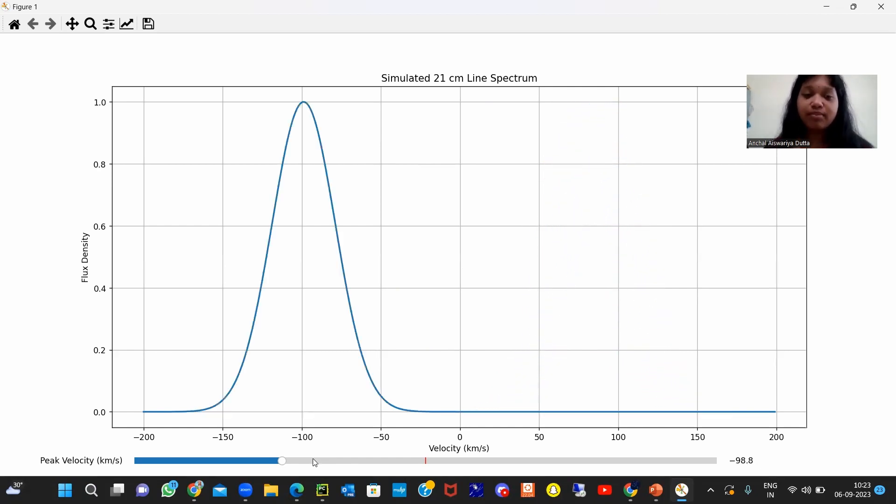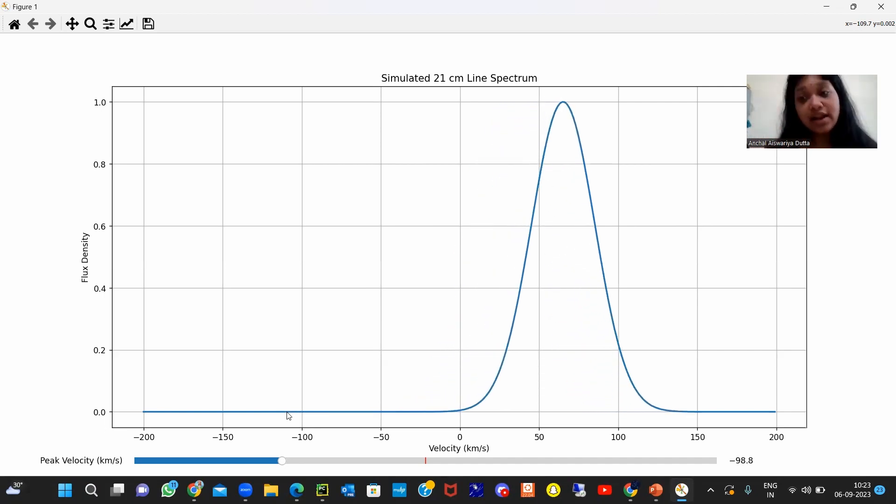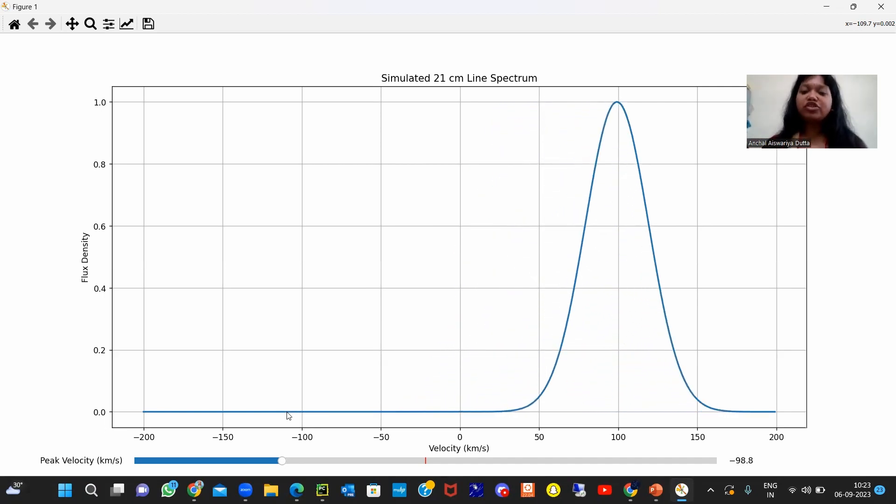So this simulates the Doppler shift. What does it relate to? It simulates the Doppler shift of the 21 centimeter line as if an astronomical object with varying velocity is observed.